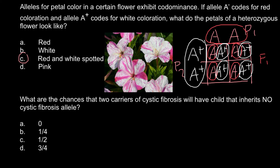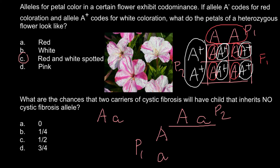The next question: what are the chances that two carriers of cystic fibrosis will have a child that inherits no cystic fibrosis allele? A carrier can be expressed as capital A, small a genotype. So if we have both parents that are carriers, we can build a Punnett square. Parent one and parent two are both going to be heterozygous — both of them going to be carriers.